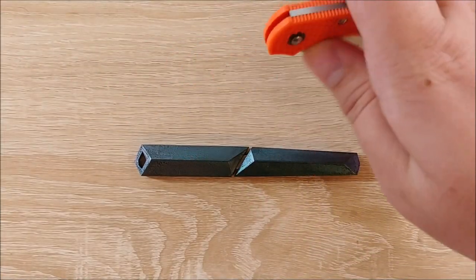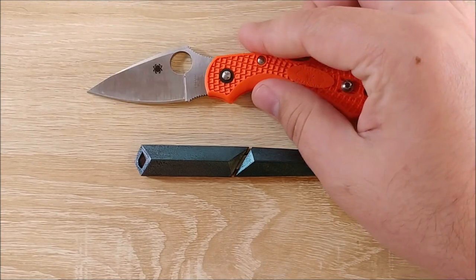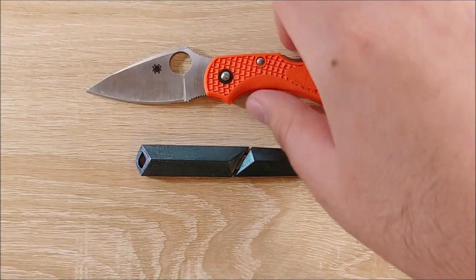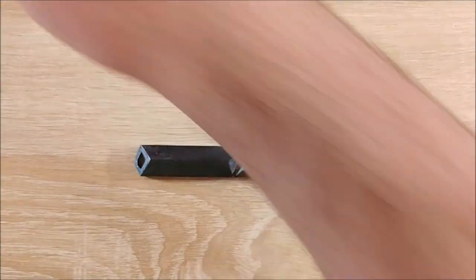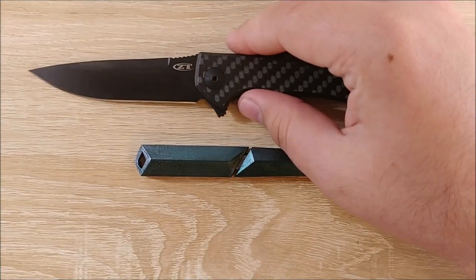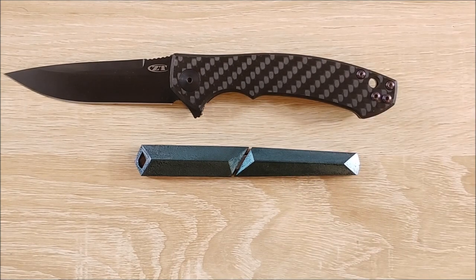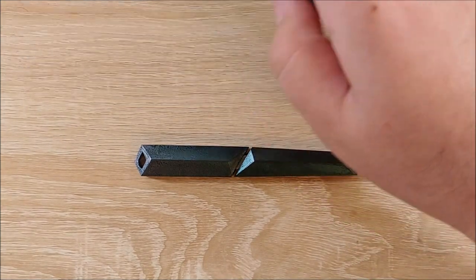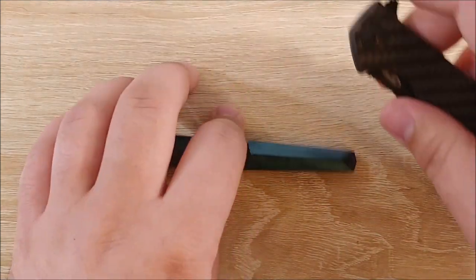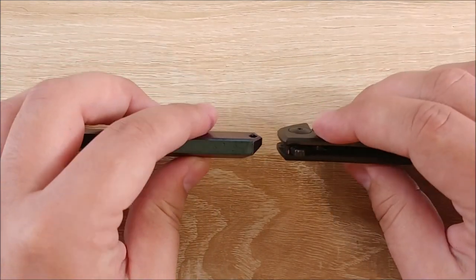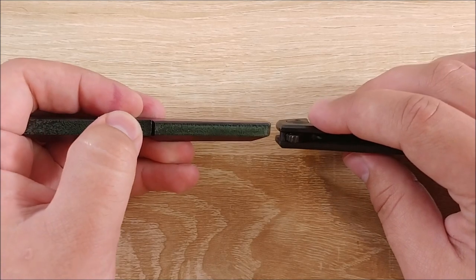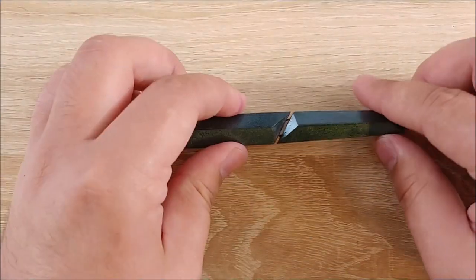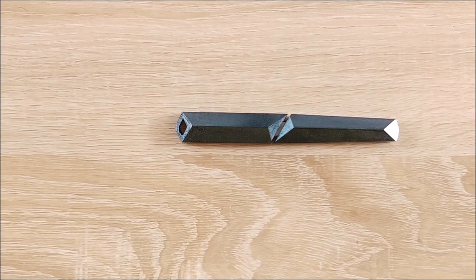Here it is against the Spyderco Dragonfly, which just completely destroys this thing. And I figured I'd go ahead and get a small flipper in here as well. This is the ZT-0450 CF. So again, this is extremely tiny. And we'll go ahead and compare thickness as well. That is the thickness of the sheath, and that is the thickness of the handle. It does taper down.